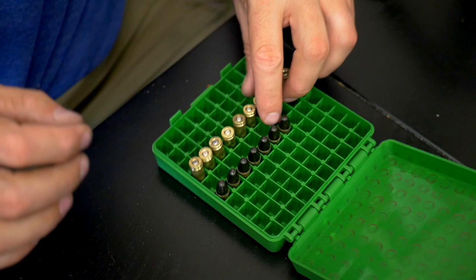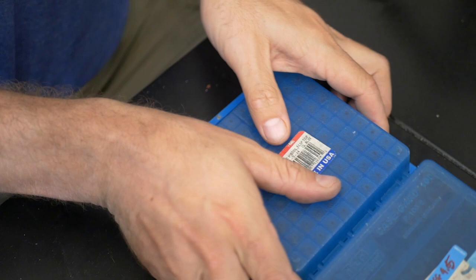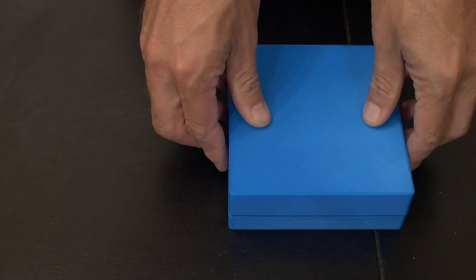So you use the stand as a flip tray to orient the ammo correctly and transfer it into the Dillon precision boxes. And when you're done case gauging, you can use the tray stand as a storage case to put it back on the shelf.